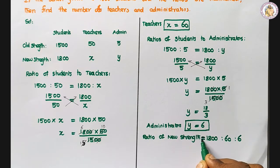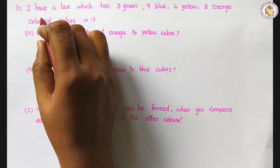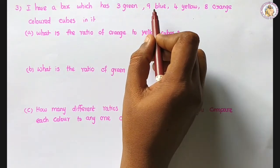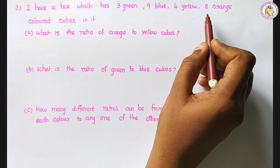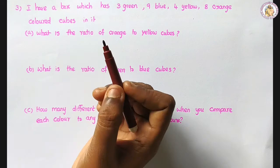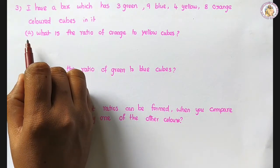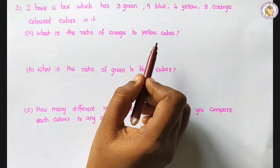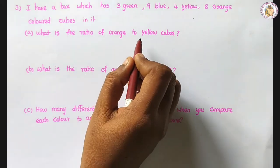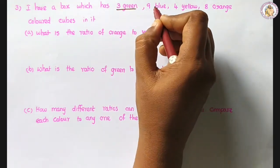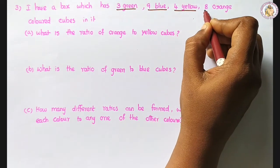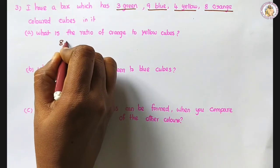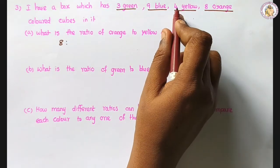Third question: I have a box which has 3 green, 9 blue, 4 yellow, and 8 orange colored cubes in it. First subdivision: what is the ratio of orange to yellow cubes? Orange is 8, yellow is 4. Both are divisible by 4. We get 2 is to 1.